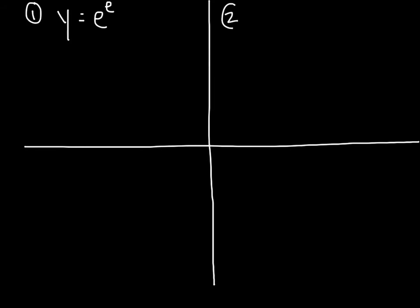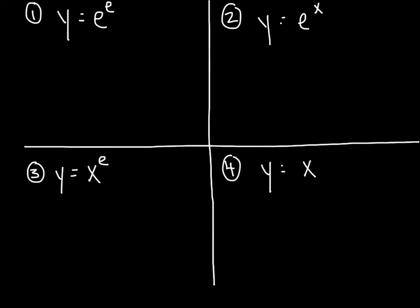Putting it all together: the tangent line is y minus 1 equals natural log of 6 times the quantity (x minus 3). One of my favorite exercises of the entire year is coming up. I'm going to put four problems on the screen — hit the pause button and try to derive each one. Identify what kind of function it is, figure out what rule applies, and take the derivative. I promise none of these repeat the same rule — every one is unique. If you can manage your way through these four derivatives, you've really done a great job.